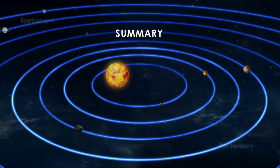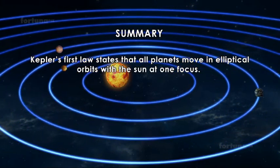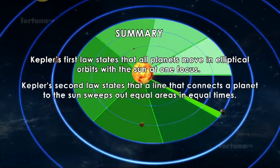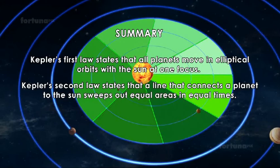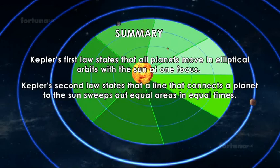Summary: Kepler's first law states that all planets move in elliptical orbits with the sun at one focus. Kepler's second law states that a line connects a planet to the sun sweeps out equal areas in equal times.